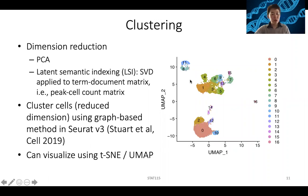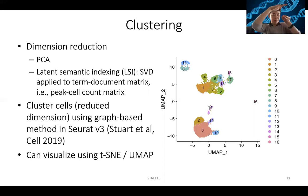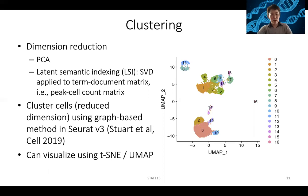We still want to do dimension reduction to be able to look at each cell in a two-dimensional space. For that, you could use PCA — remember homework three for single-cell RNA-seq. You can use PCA because this is a huge matrix. We can't have hundreds of thousands of peaks, so we want to reduce the numbers for each cell to a manageable amount, maybe a hundred or maybe two. You can decide how much variability you want to capture.